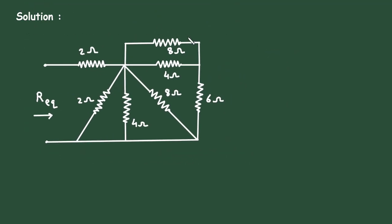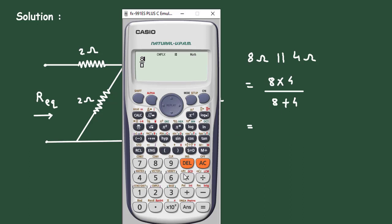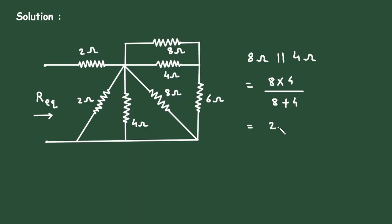Now as we can see here, this 8 ohm and 4 ohm, these are connected in parallel. So 8 ohm parallel with 4 ohm, this will become 8 into 4 divided by 8 plus 4.